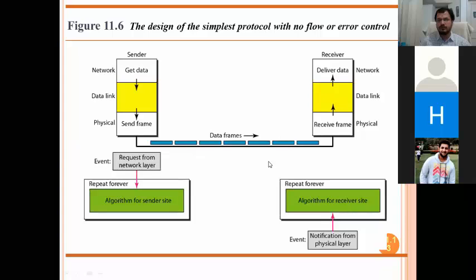Now please remember that flow control is needed in two different layers. The first layer is the data link layer where we need to maintain flow, and also in the transport layer. In our OSI model we are performing flow control in both the data link layer and the transport layer.